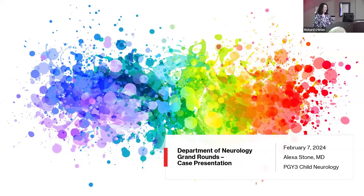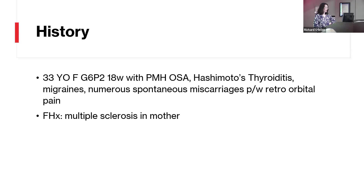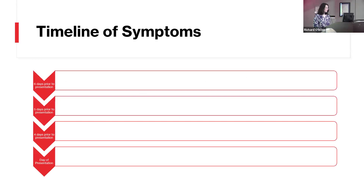We have a 33-year-old female who is currently 18 weeks pregnant, G6P2. She has a past medical history of obstructive sleep apnea, Hashimoto's thyroiditis, migraines, and numerous spontaneous miscarriages with previous pregnancies. She presents to the ED with retroorbital pain in her right eye. Family history is notable for multiple sclerosis, and we were consulted specifically to rule out optic neuritis.